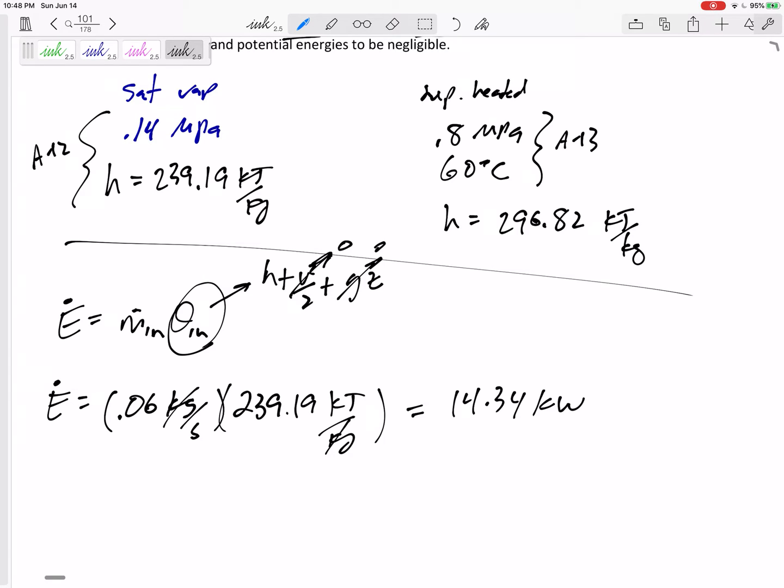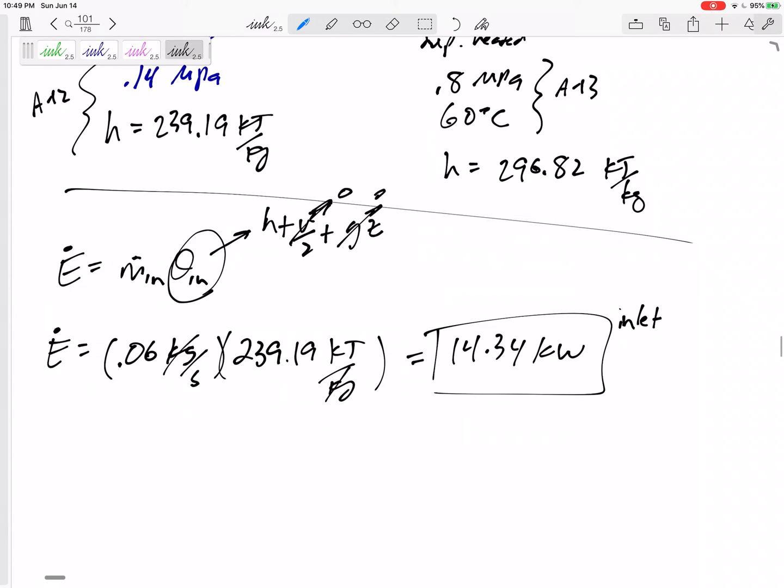So that is the rate of energy, right? Energy would just be kilojoules. The rate would be kilojoules per second, which would be kilowatts. This is at the inlet.